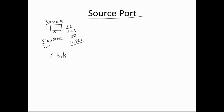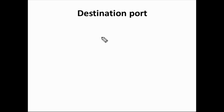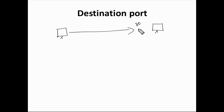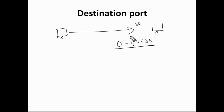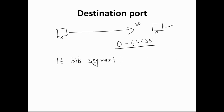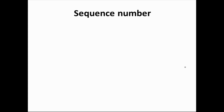Next we have destination port. The destination port tells us about the destination port used in the traffic. It can be anything in the range of 0 to 65535, which covers all known and well-known ports. The destination port segment tells us what port is being used for the destination. It is also a 16-bit segment.